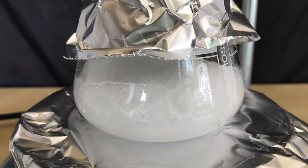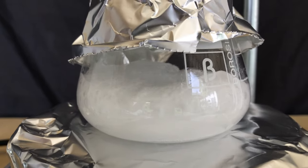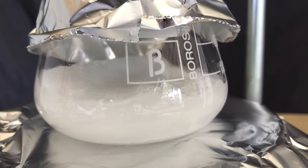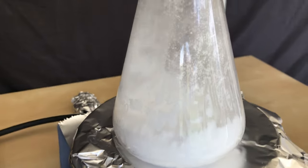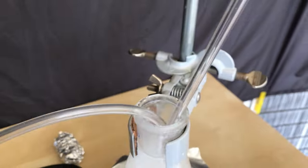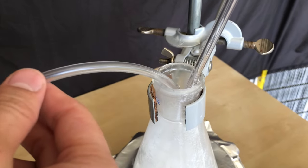When most of the ether was gone we were left with this white gooey substance. The hotplate was cranked up to 140 degrees celsius and I waited until the product was dry. To get rid of the last bit of ether we blew air into the Erlenmeyer flask.